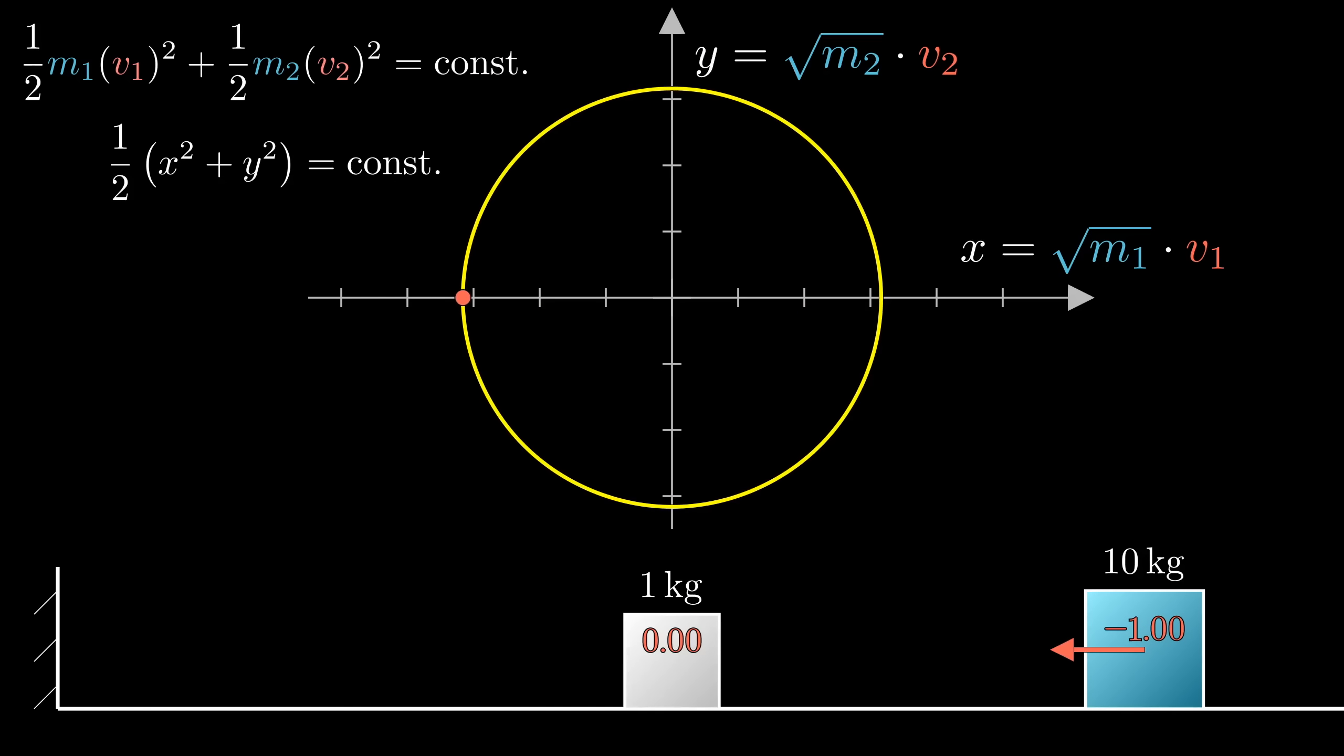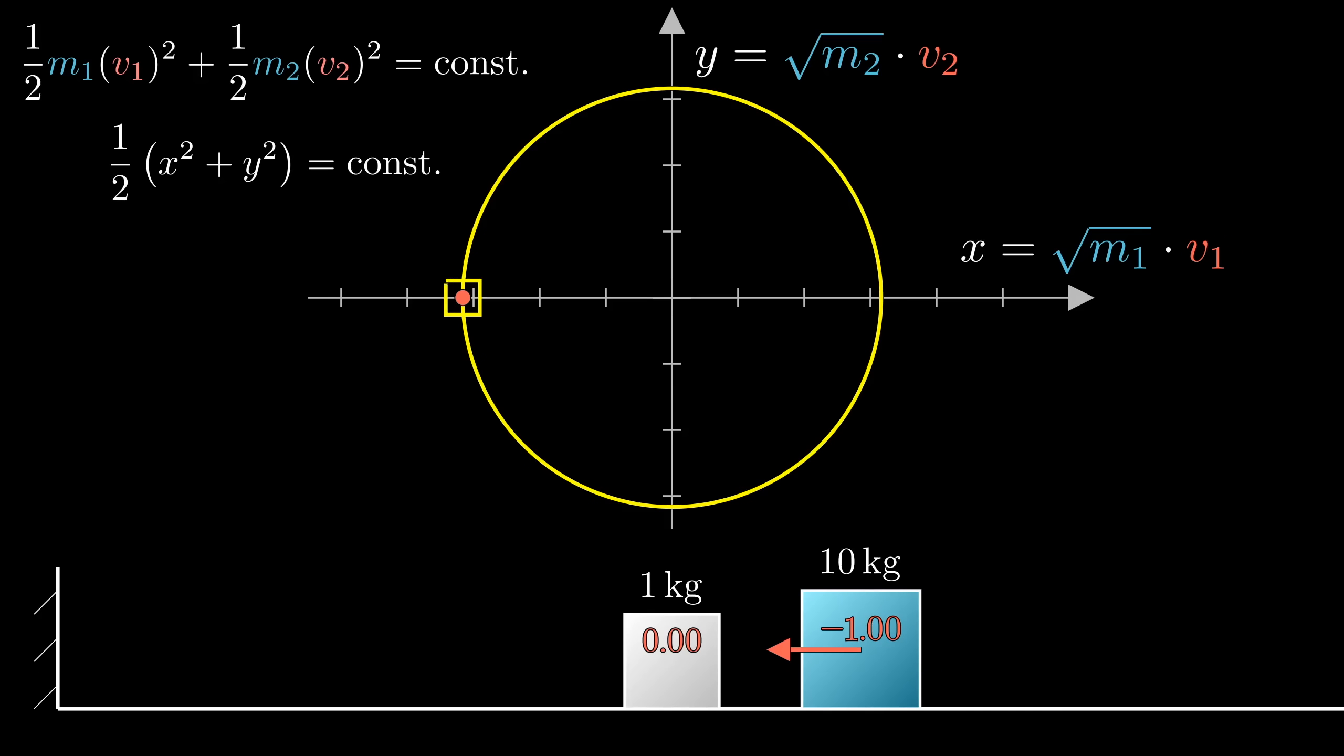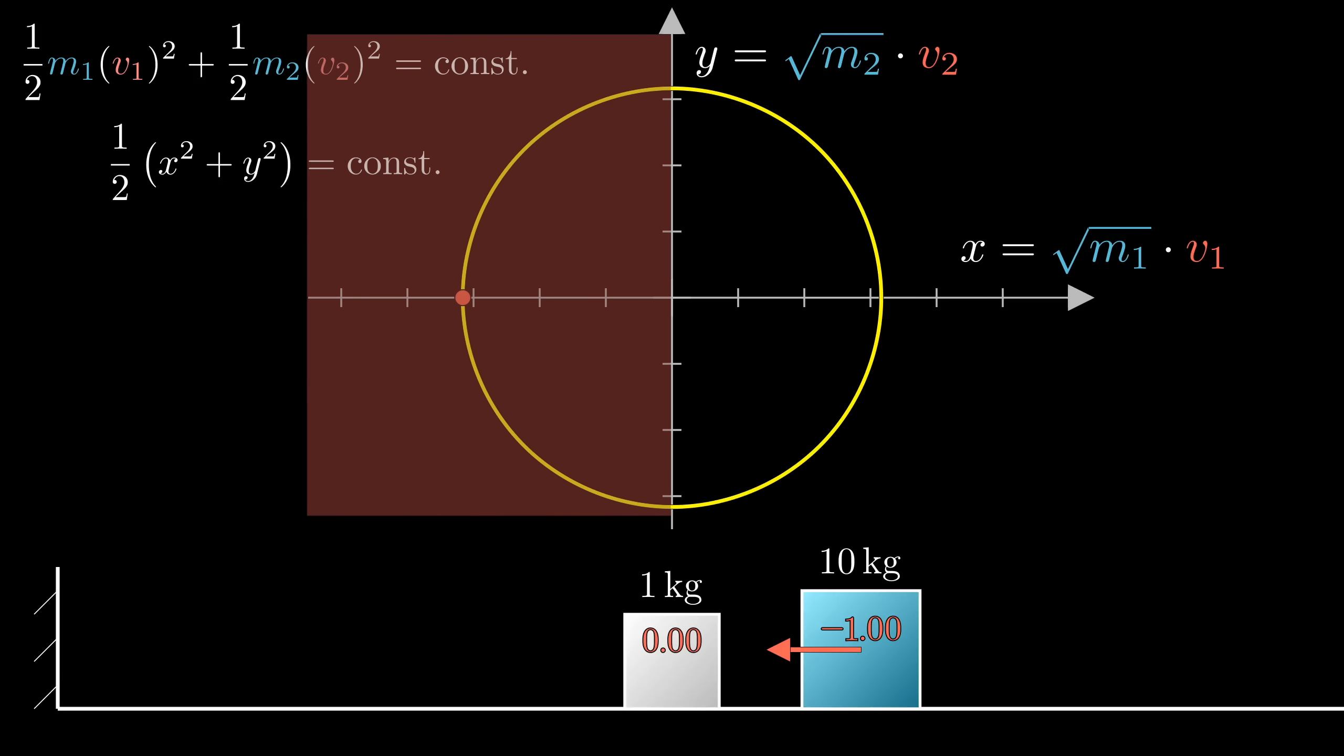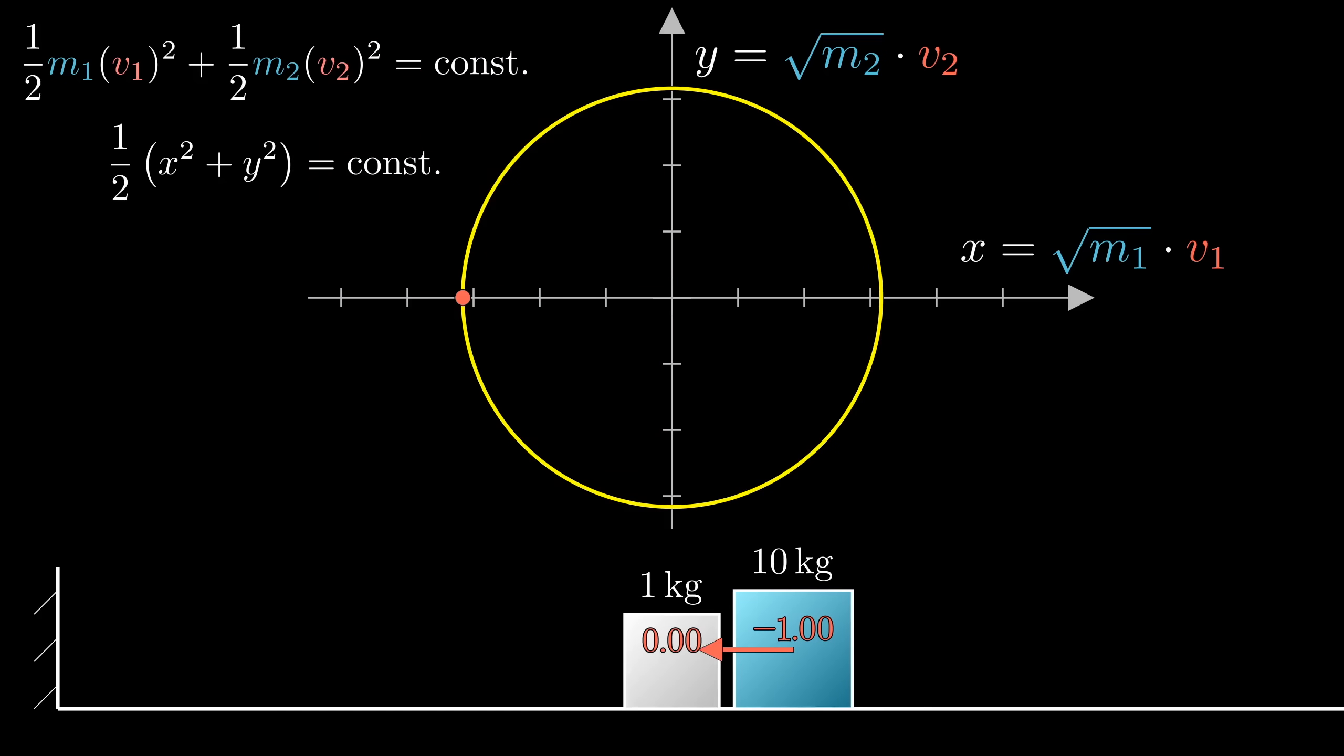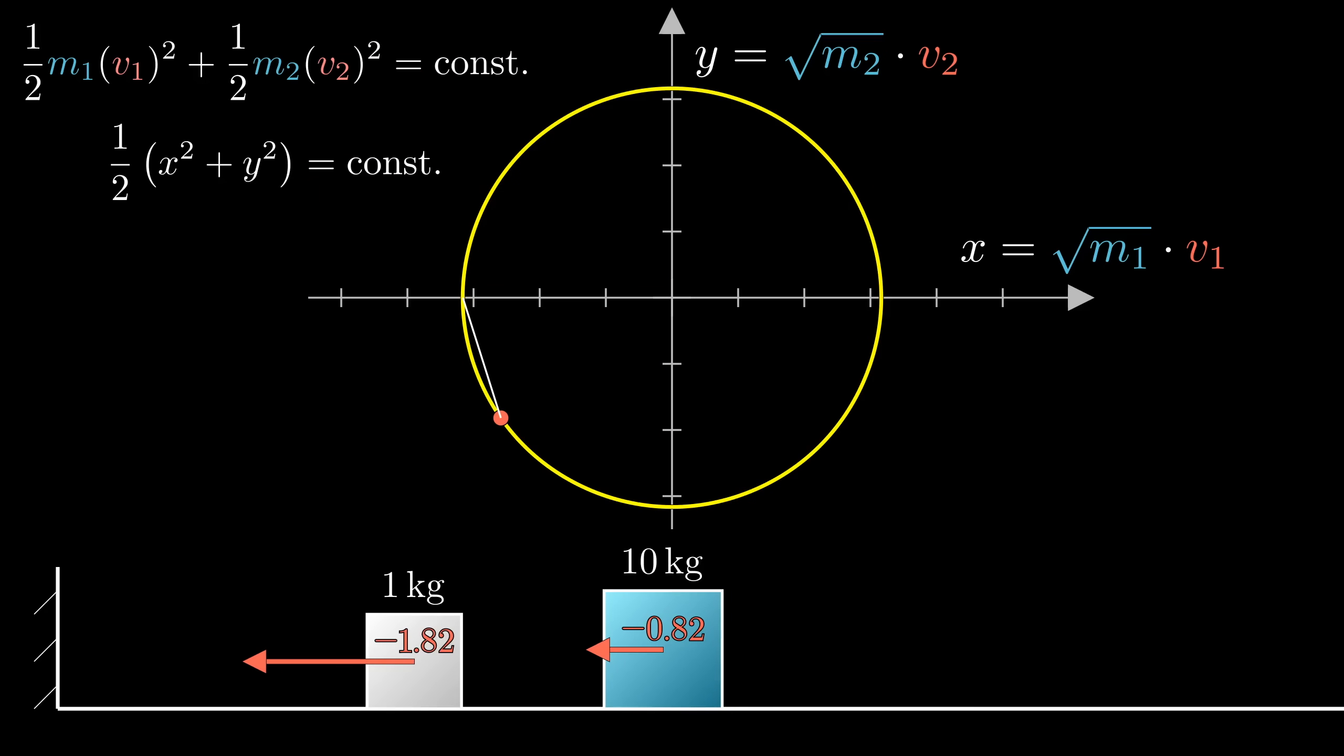At the beginning, when the first block is sliding to the left and the second one is stationary, we're at the leftmost point on the circle, right? Where the x coordinate is negative and the y coordinate is zero. What about right after the collision? How do we know what happens? Conservation of energy tells us that we must jump to some other point of the circle, but which one?